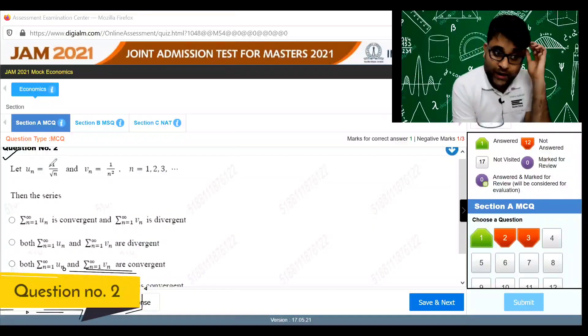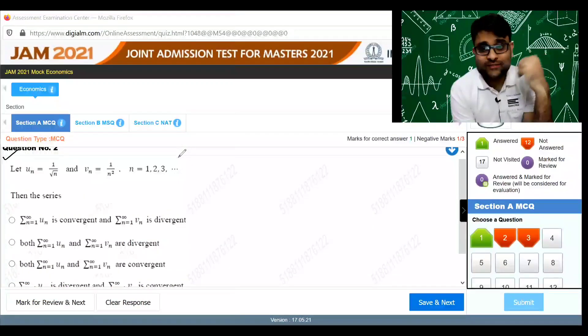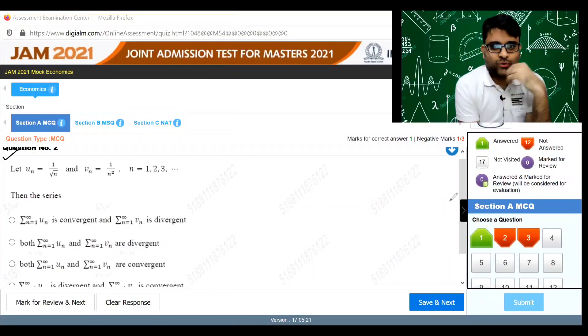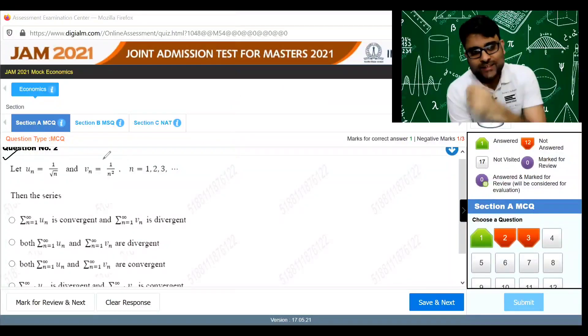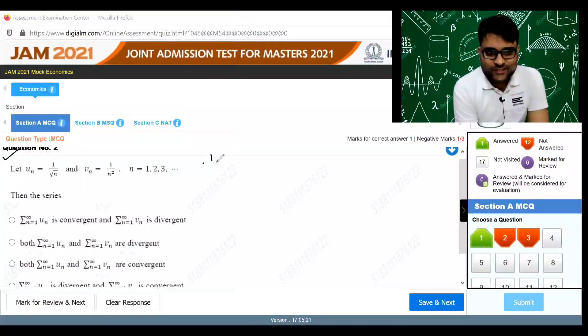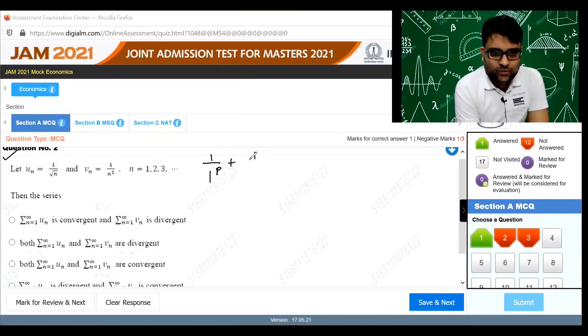Question number two: Let un is equal to one by root n, vn is equal to one by n squared, n is equal to one, two, three, so on and so forth. This is a p-series: one by one to the power p plus one by two to the power p plus dot dot.